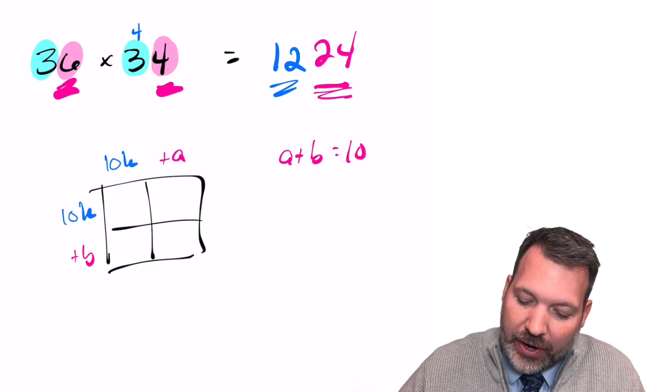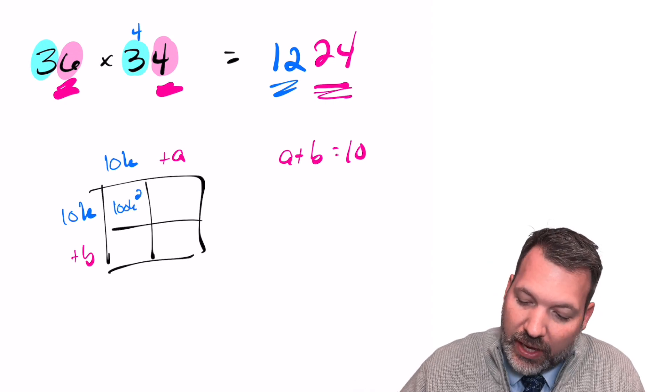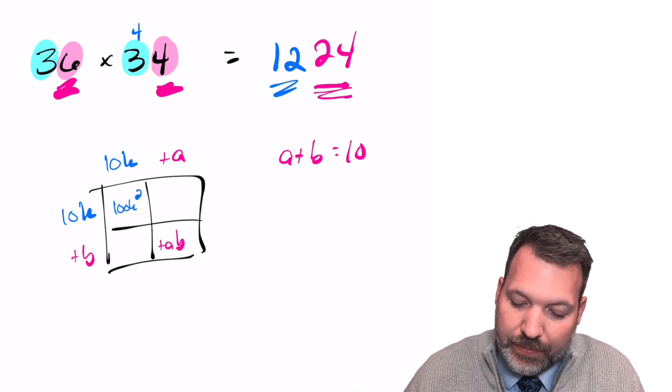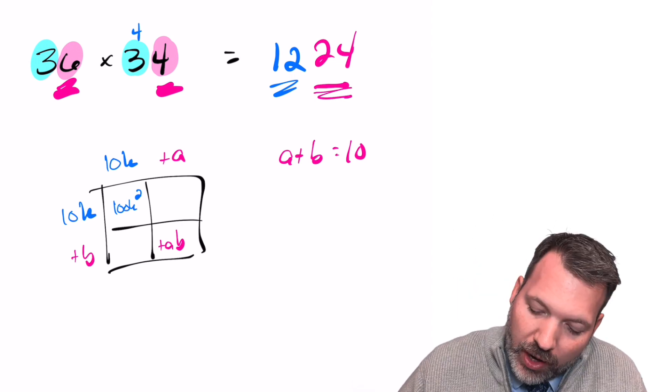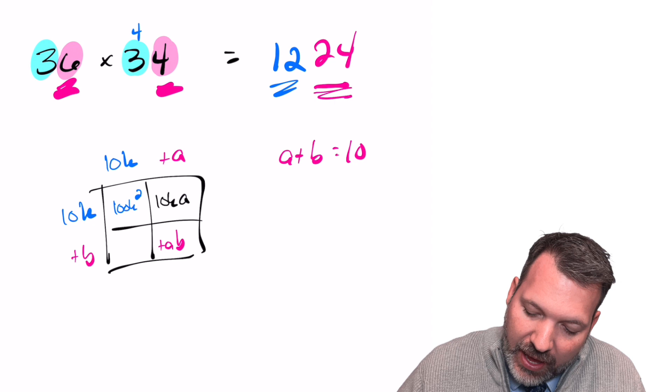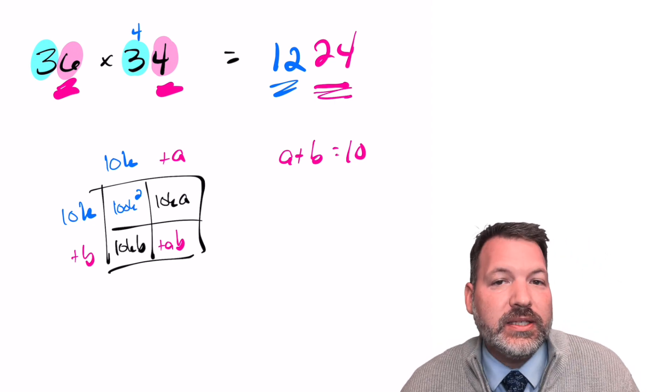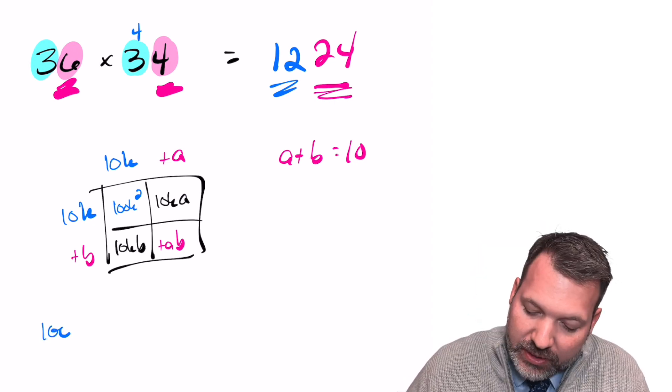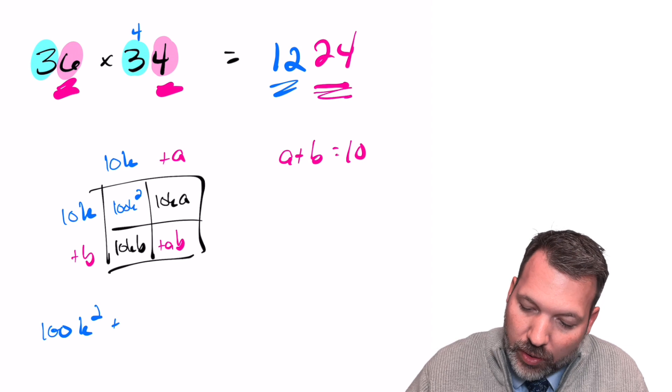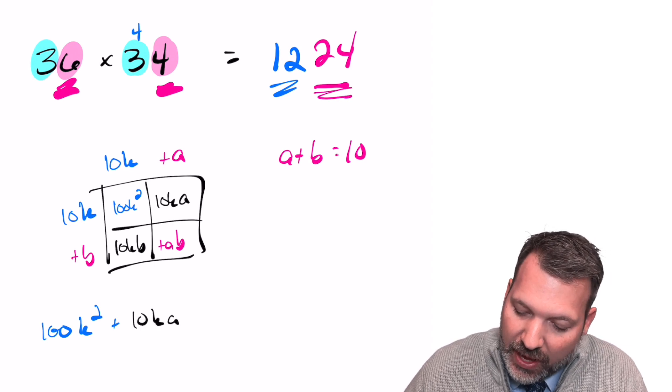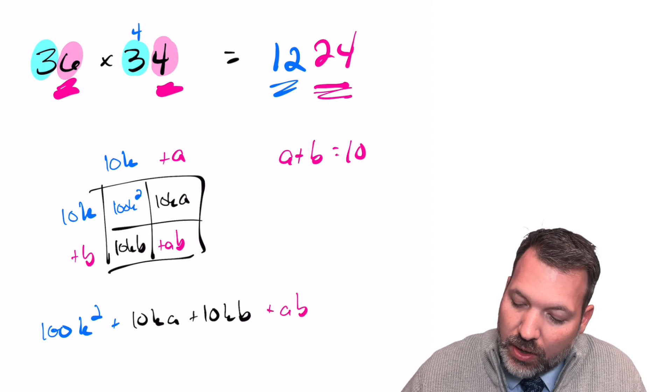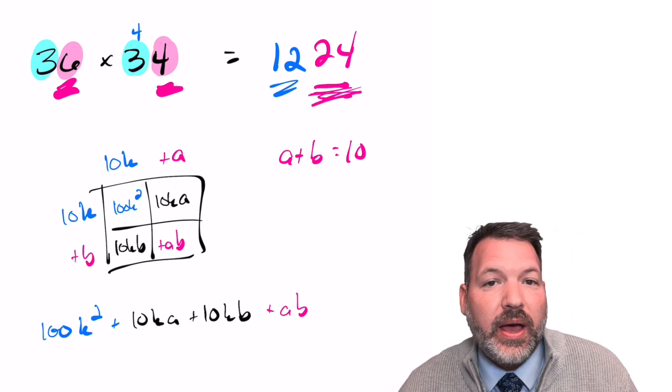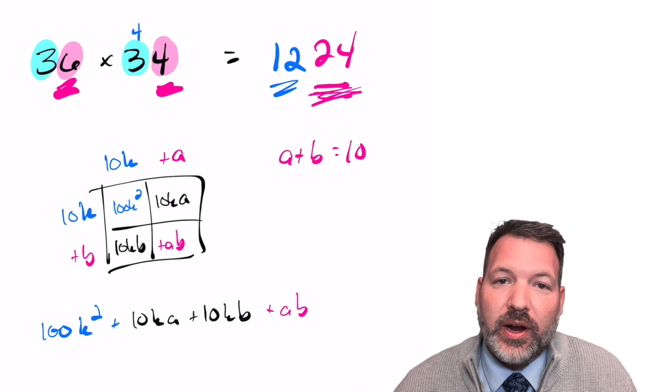As we multiply this through using our area model, we get 100k squared plus ab, the same place before that we got 924. And then we also happen to get 10ka and 10kb in these other two cells. As we write this out, we get 100k squared plus 10ka plus 10kb plus that ab, which again, we're expecting to somehow end up as the final two digits of our product.